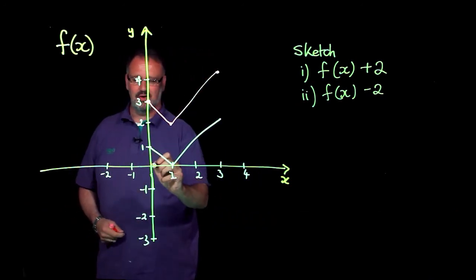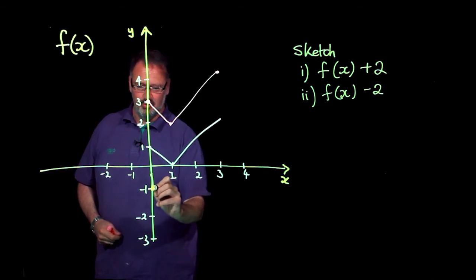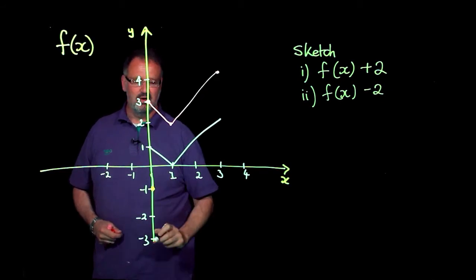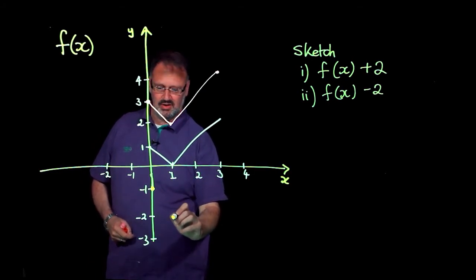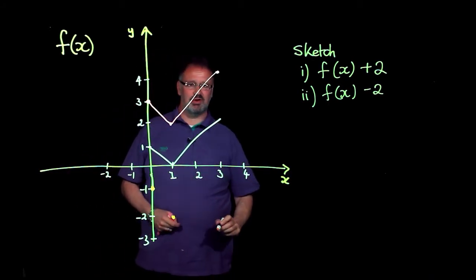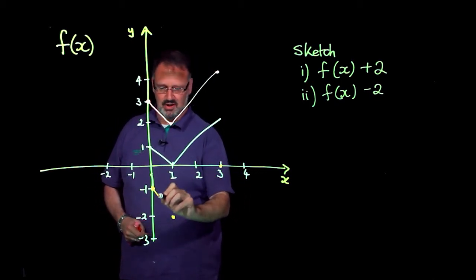So this point here at 0, 1 becomes the point here of 0, negative 1. This point here translates down by 2 units and this point here translates down by 2 units to there.